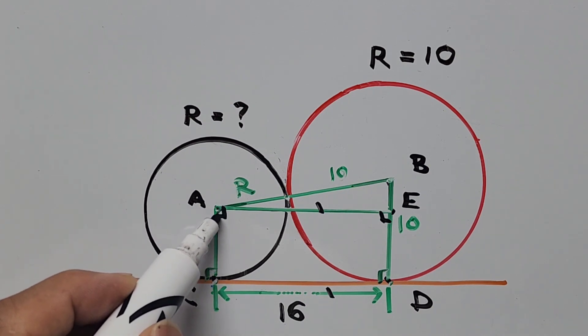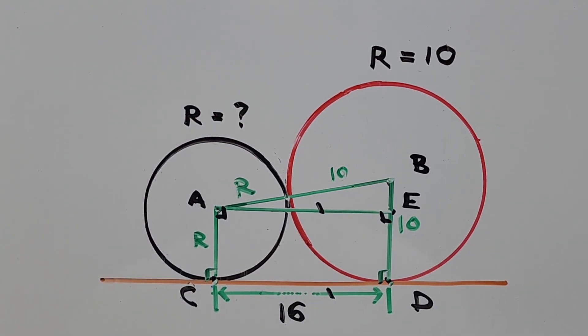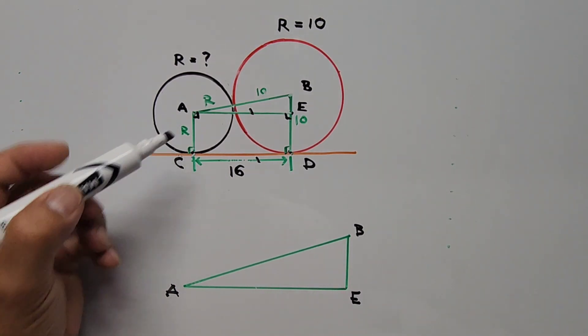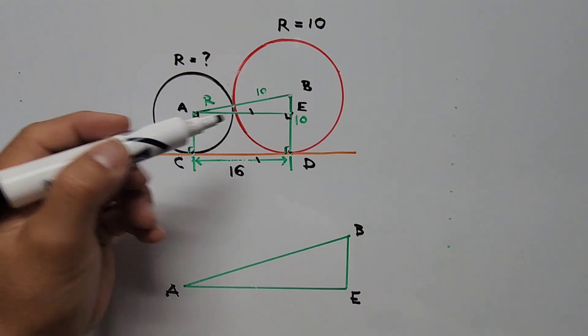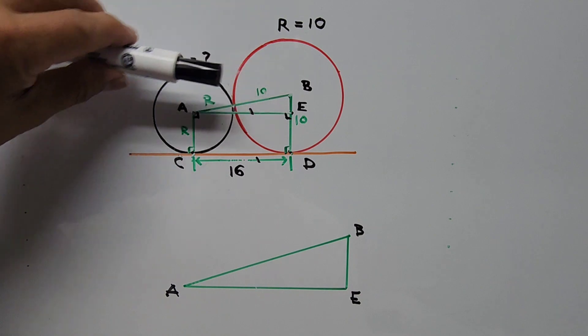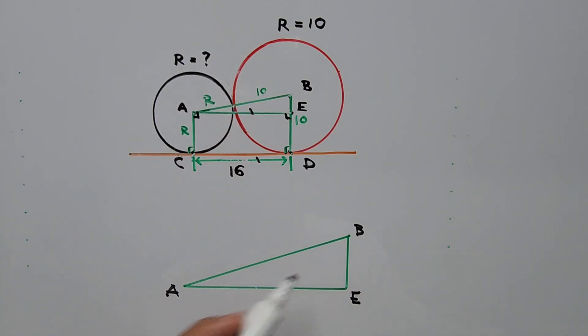Next we're going to isolate the right triangle ABE. So we have here the isolated triangle ABE or AEB. We have here AB is the sum of the radius of the two circles 10 and R. So AB is 10 plus R.